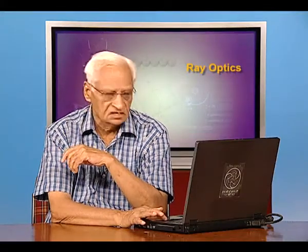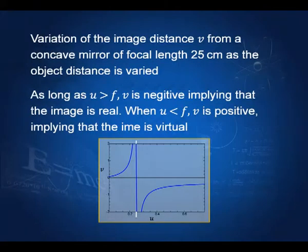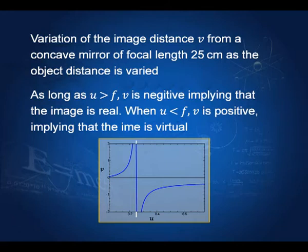Today we continue with the discussion. I will show you this slide which shows the relation between V and U for a concave mirror. As you know, U is the distance of the object from the mirror and V is the distance of the image from the mirror. You can see that this is for a concave mirror of focal length 25 centimeters. As long as U is such that the object is away from the focus, V is always negative, meaning the image is always real.